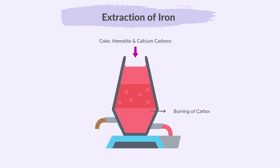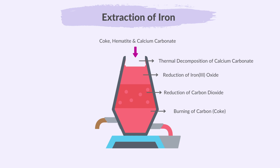In summary, the blast furnace process involves burning coke for heat, converting carbon dioxide to carbon monoxide, using that carbon monoxide to reduce iron 3 oxide to iron, decomposing limestone to remove impurities, and forming slag to separate impurities from the molten iron.